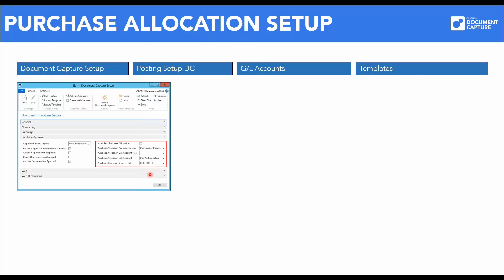The general Document Capture setup holds the basic parameters for purchase allocation, such as manual or automatic post of the purchase allocation. It is important to clarify how the cost amount is to be posted in the general ledger. The choice determines which cost registration account you are going to use.